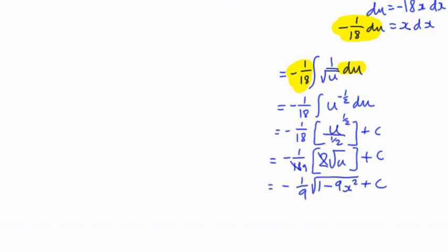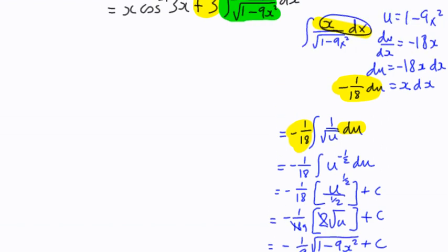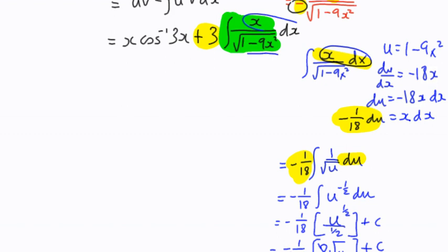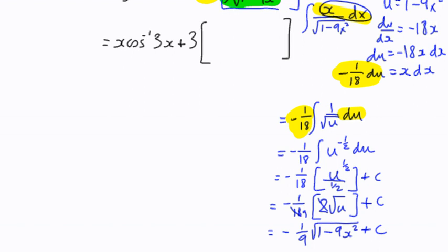Okay, so we've done all of that. Why? Because we're actually trying to sort out this integration up here. So going back, I can say that I've now got x times the inverse cos of 3x, plus 3 times whatever I just worked out there. And then I worked out that as being negative 1 9th times the square root of 1 minus 9x squared. We could stick that up, plus c. And we can multiply out of the bracket.